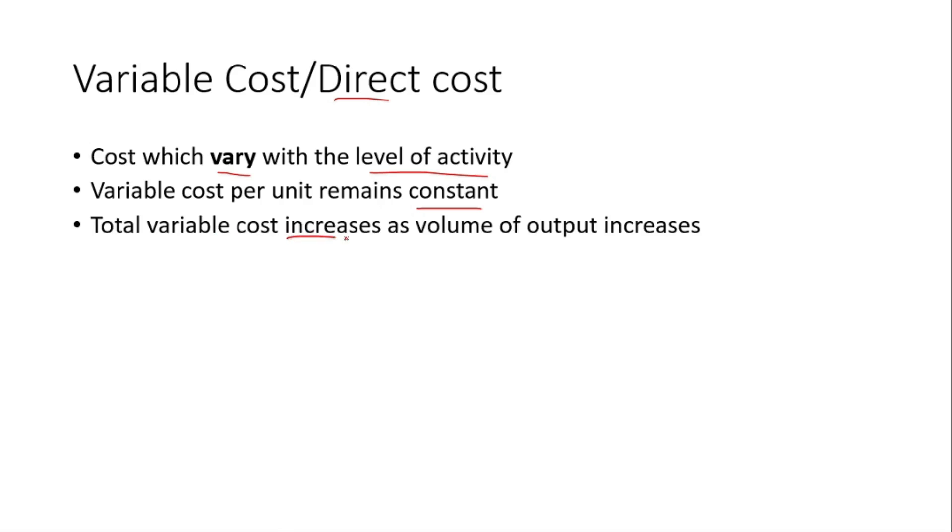Variable cost is also known as direct cost. They are costs which vary with the level of activity. They have a cost per unit which remains constant. And the total variable cost increases as volume of output increases.